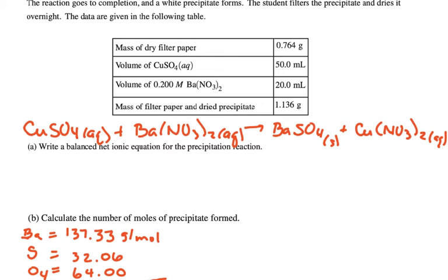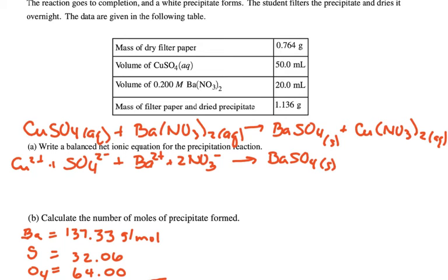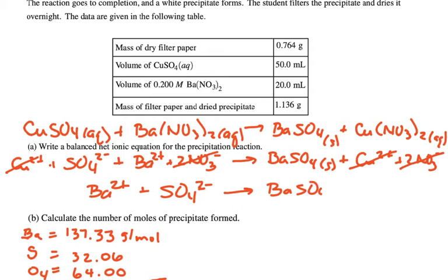So next, anything that is aqueous will actually exist in solution as separate ions. So we're going to have Cu2+, we're going to have SO42-, we're going to have Ba2+, and two NO3- ions. And the barium sulfate is not going to be as separate ions. It's a precipitate, so it's going to be together as an ionic solid. And then we have Cu2+, and two nitrate ions. So we can see what's happening is several of these ions are not doing anything. There's spectator ions, so the nitrates are going to cancel. Same thing for the coppers are going to cancel.